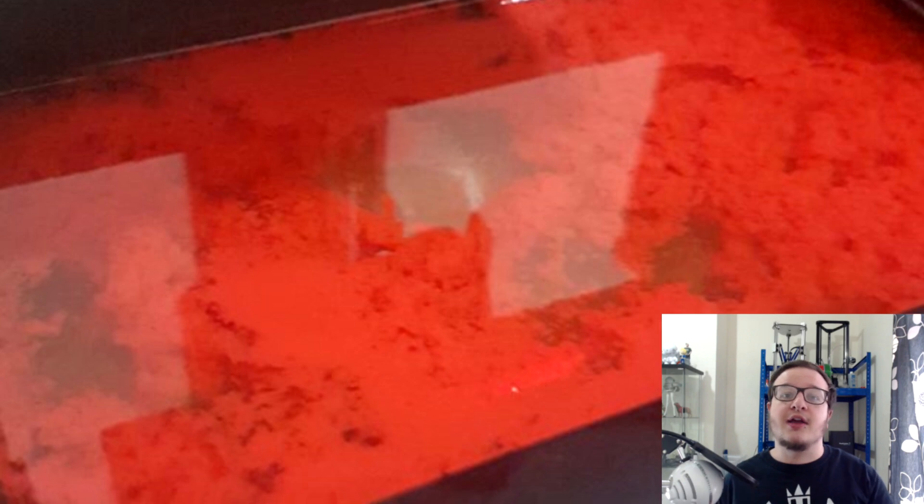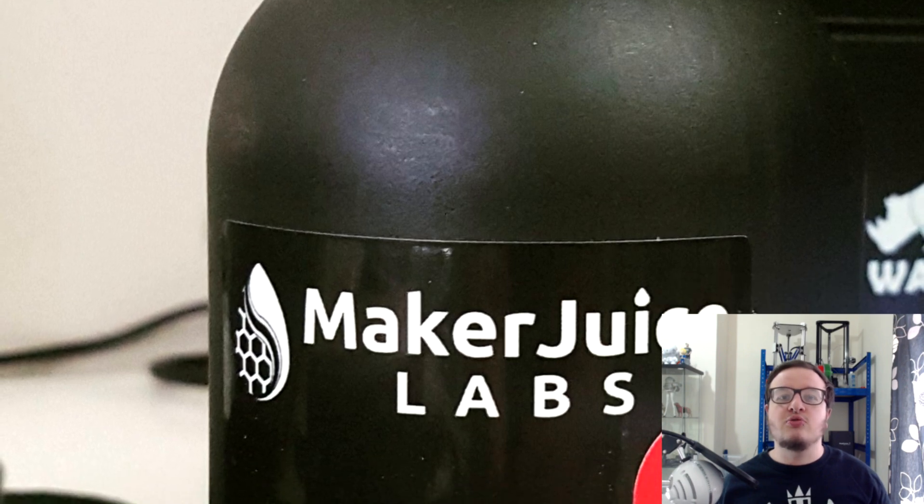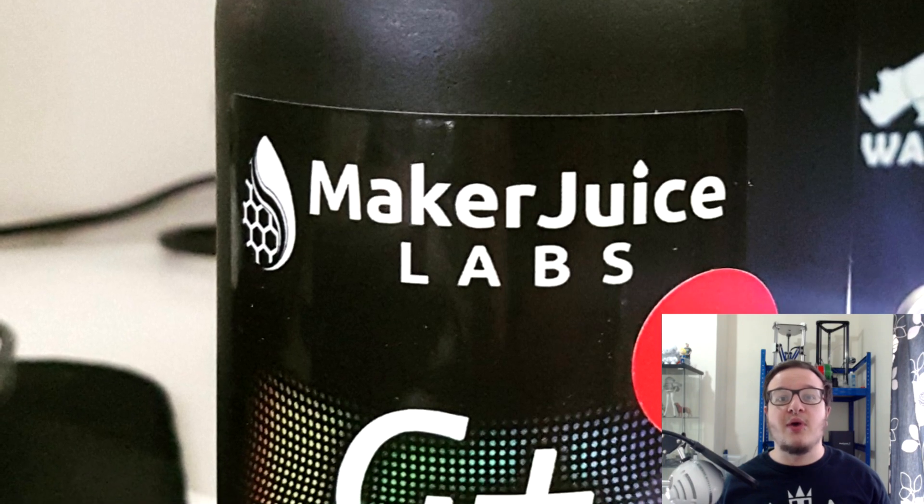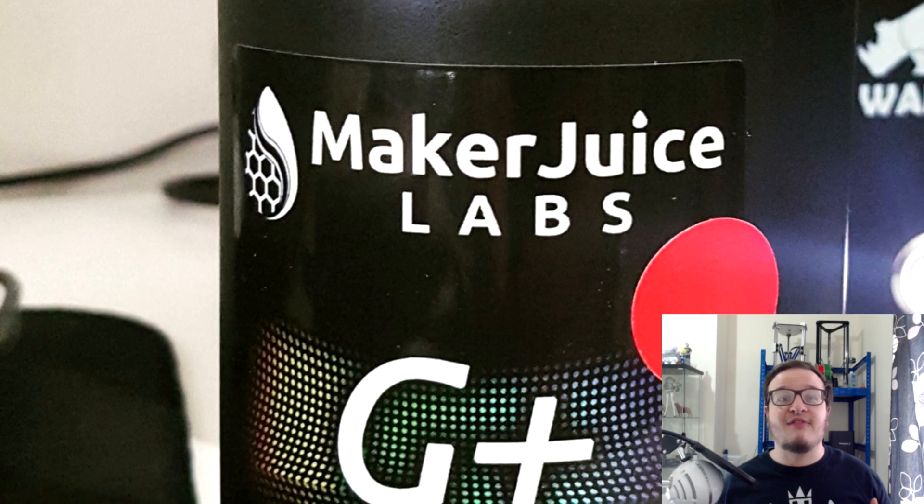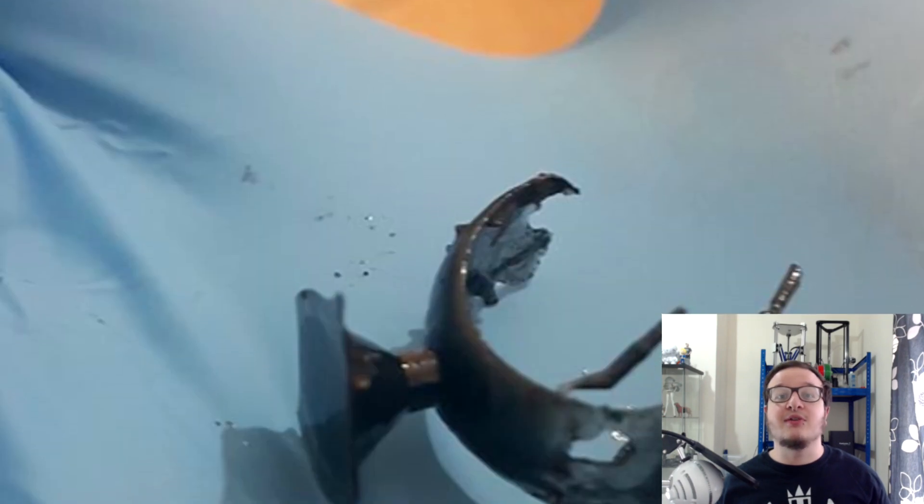So I contacted iMaker, the company I bought it from and they replaced it for me. The first one I had was the Maker Juice G Plus and that was the one I had all the issues with. After talking with the lead chemist for Maker Juice I went with the SF which is a semi-flexible resin. Received it in black and that still didn't work.